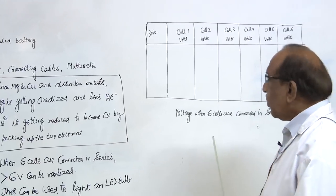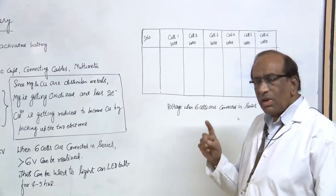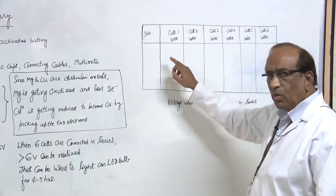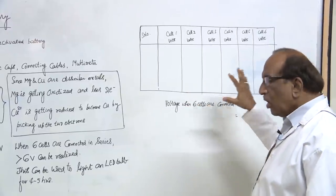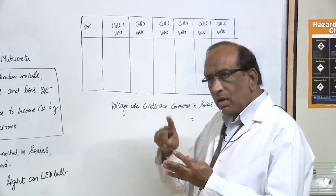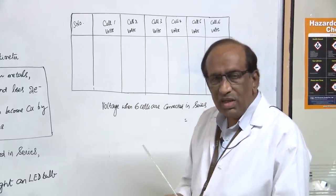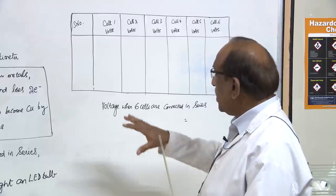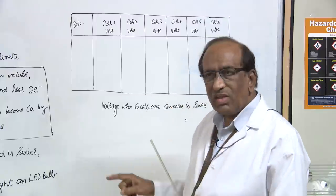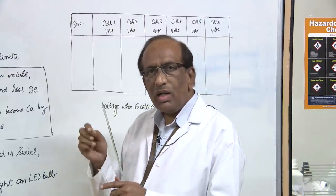Now after you have done this, what we are going to demonstrate now is we are going to have 6 cells. We are going to measure the individual voltage of all the 6 cells, record the voltage of those 6 cells and then connect all the 6 cells in series. That means magnesium to copper, copper to magnesium, like that we will connect them in series. You people should be familiar with connection in series. When you do that in series you measure the voltage, the voltage will be added up for all the 6 cells and that is the voltage which you can use for lighting an LED bulb or a fan.